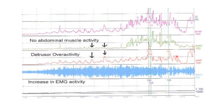In this slide, there is no rise in detrusor, abdominal, or vesical pressure during the filling phase. However, there is a slight detrusor contractility — detrusor overactivity — during the filling phase, but with no leakage. When overactivity is present with no leak mentioned, this is the graph of detrusor overactivity only, without urge incontinence.